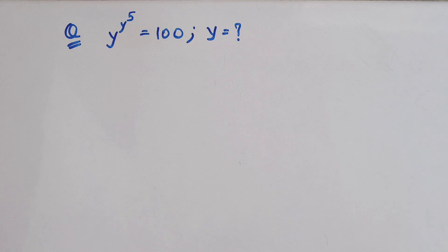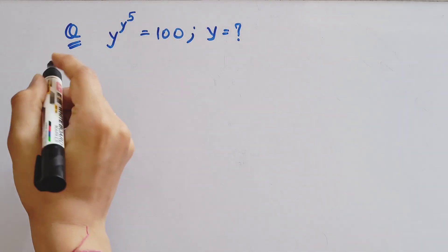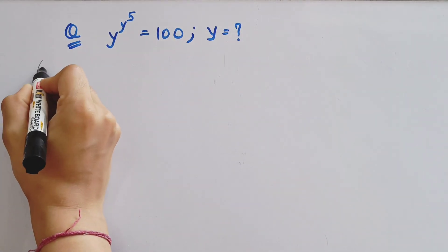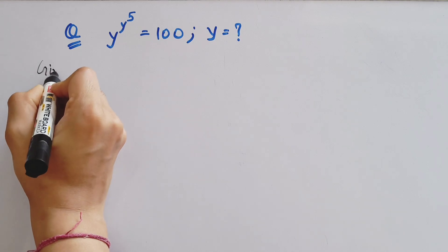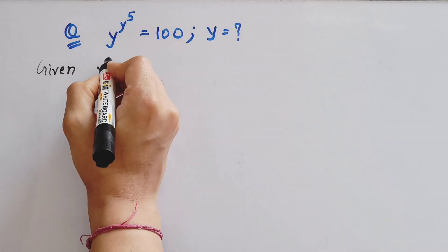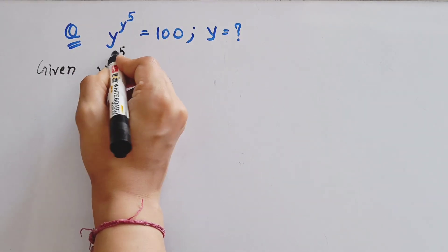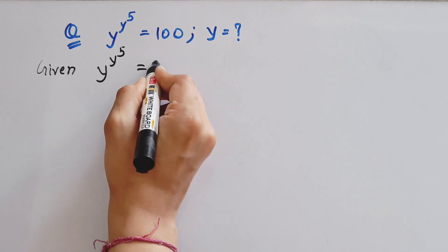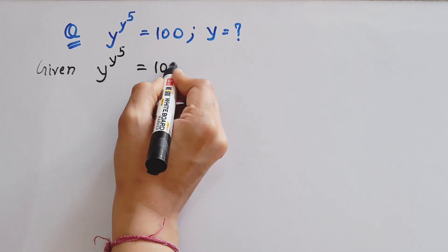We have y to the power y to the power 5, equal to 100. Then find the value of y. We have to find the value of y. So first we'll write the given: y to the power y to the power 5 equals to 100.